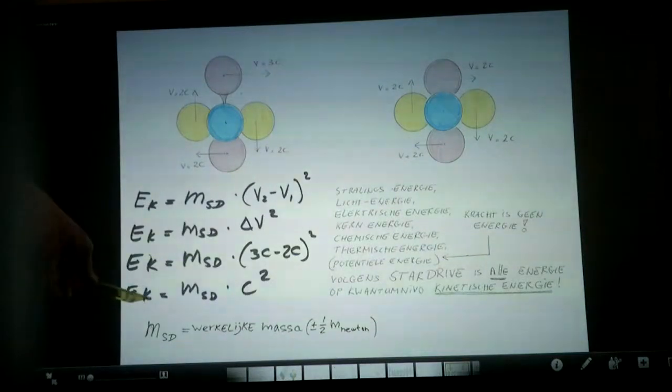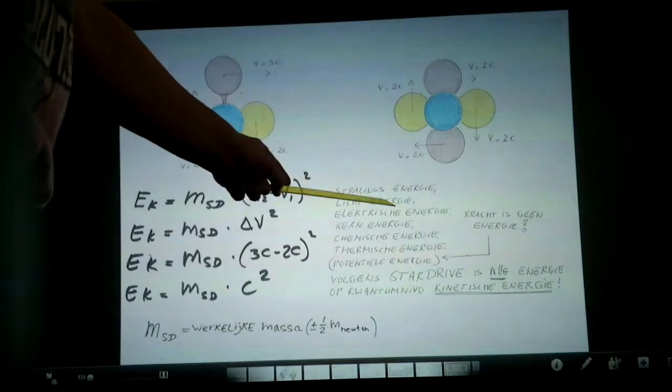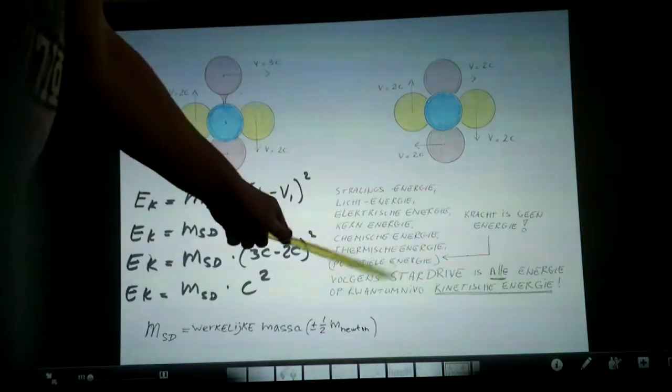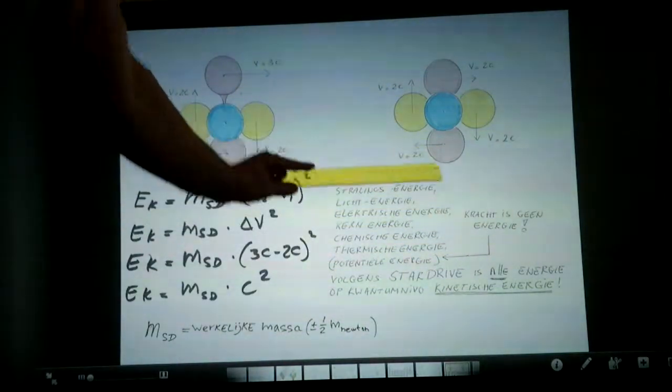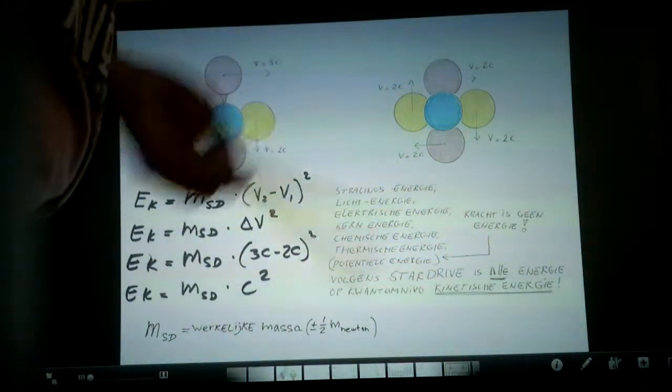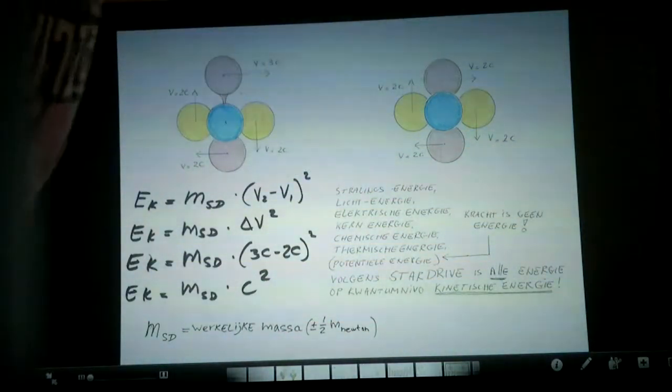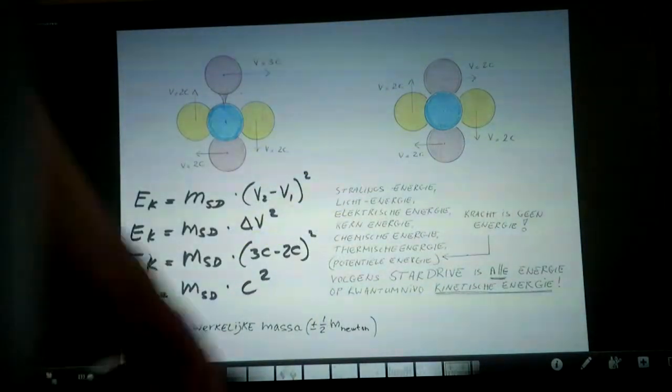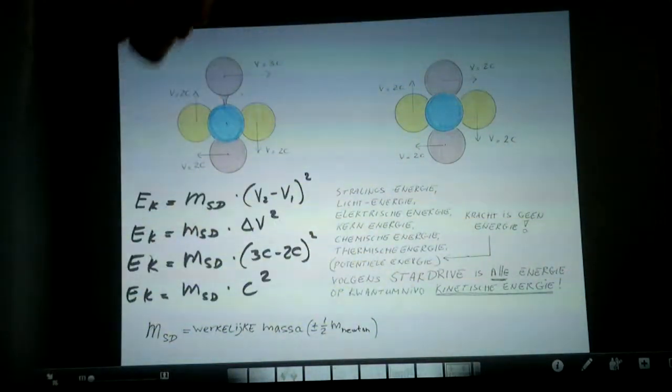And let me tell you why this is kinetic energy and not just energy at all. Because radiation energy, light energy, electric energy, nuclear energy, chemical energy, thermal energy. Potential energy does not exist because it's a force, it's not energy. Potential energy is only a force, not energy. But all those energies are, in fact, when you look at it on a smaller scale, are in fact kinetic energies. Light is a photon, that's one of those quarks coursing through space. The same comes for all those kinds of energies. Only one kind of energy is there, and that's kinetic energy. There's nothing else.